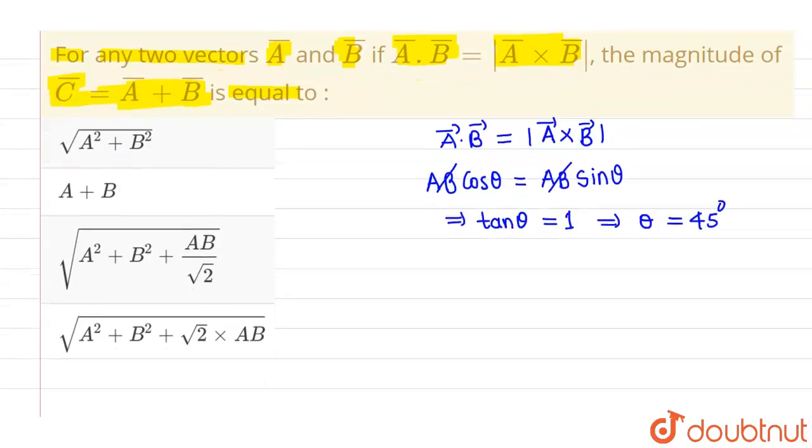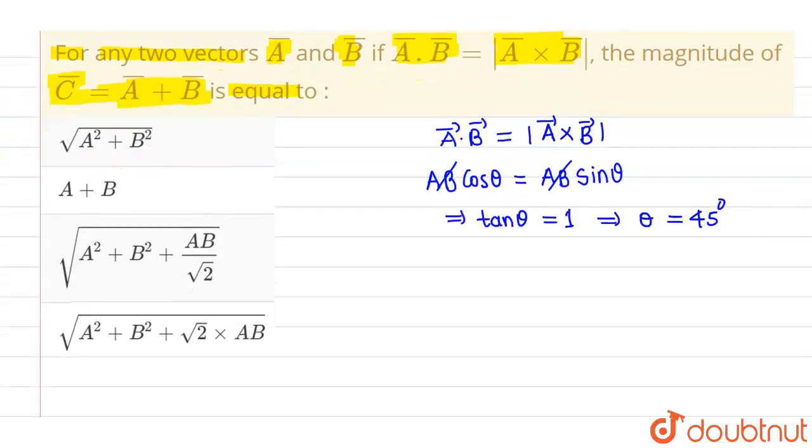So now I have to find out the magnitude of C vector, which is A vector plus B vector. So let us assume that C vector which is A vector plus B vector, its magnitude will be given by root over A squared plus B squared plus 2AB cos theta. Now here theta is 45 degrees, so this will be cos 45 degrees.